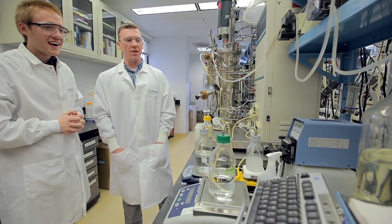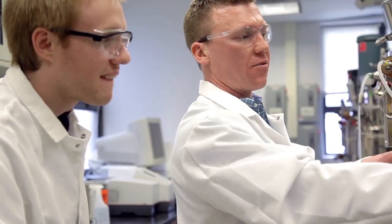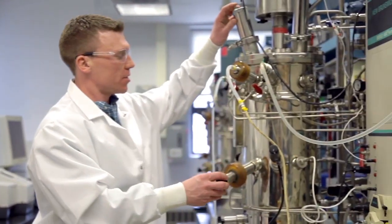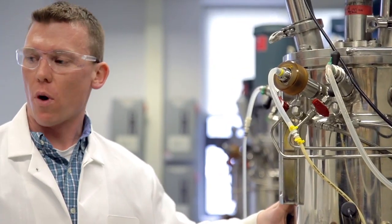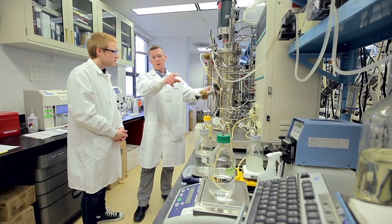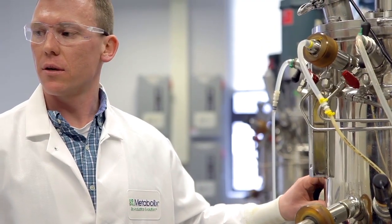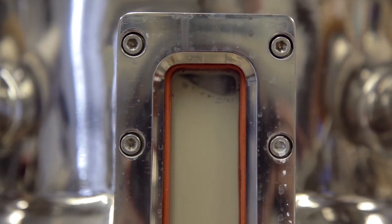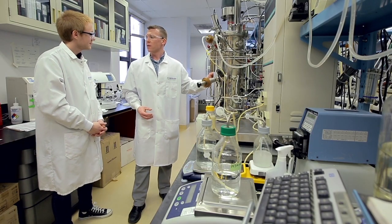That it gets fed to what's called a fermenter here. And inside the fermenter is mostly water, salts, that glucose solution, and bacteria. And the bacteria are what converts that glucose into biodegradable plastic or bioplastic.